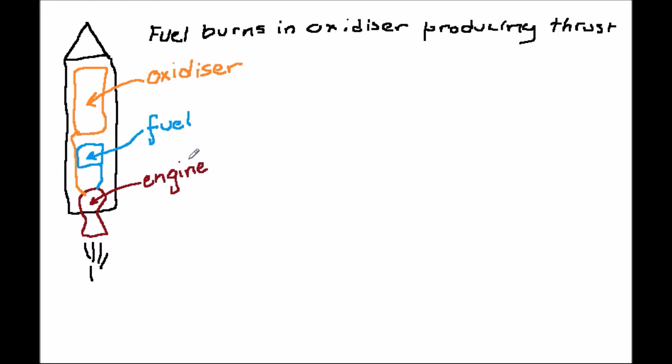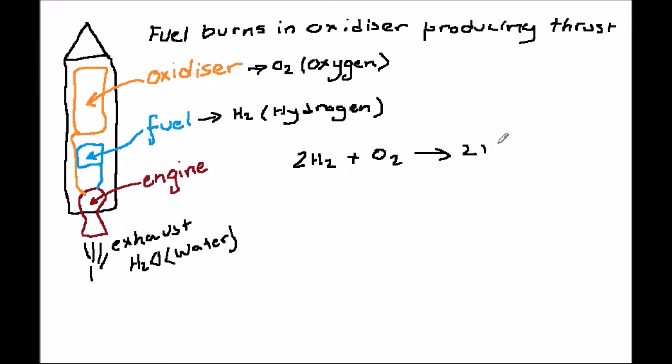Let's think about the burning of the fuel. To make this as simple as possible, let's consider hydrogen and oxygen as the fuel and the oxidizer. These are what were used in the main engines of the space shuttle. The reaction is two molecules of hydrogen burnt with one molecule of oxygen to produce two molecules of water.